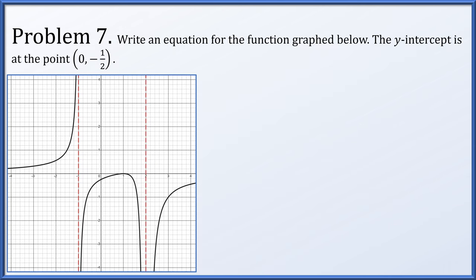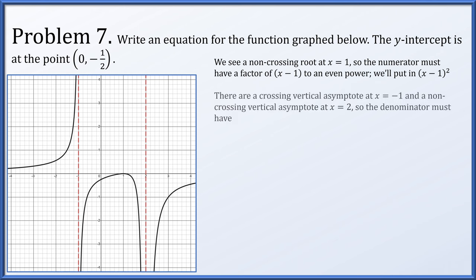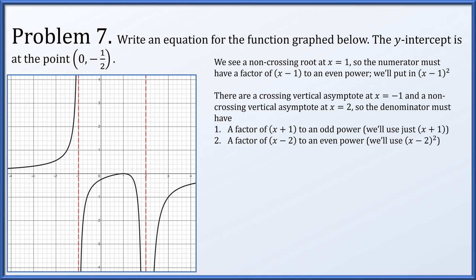In problem 7, we're asked to find an equation for the function graphed, and we are explicitly told the y-intercept is at (0, -1/2). There's a non-crossing root at x = 1, so the numerator has (x-1) squared. There's a crossing vertical asymptote at x = -1 and a non-crossing vertical asymptote at x = 2. So the denominator has (x+1) to the first power and (x-2) squared. Our candidate function is A · (x-1)² / ((x+1)(x-2)²). The horizontal asymptote of y = 0 matches since the denominator has larger degree.